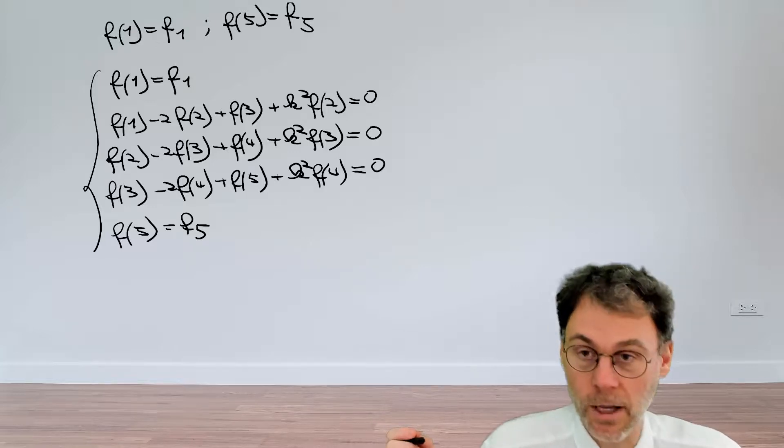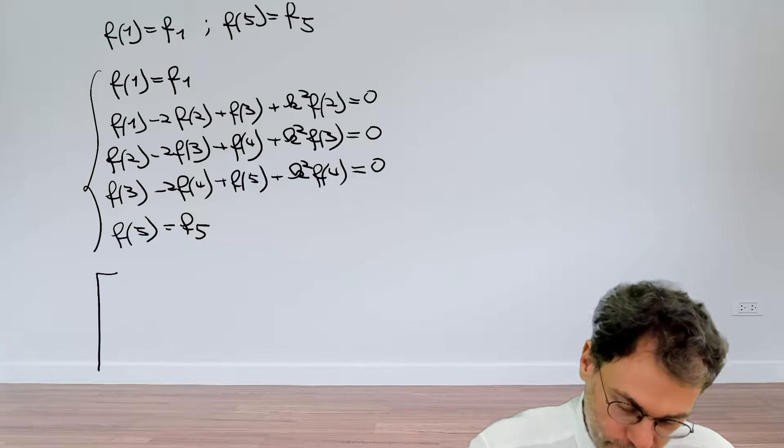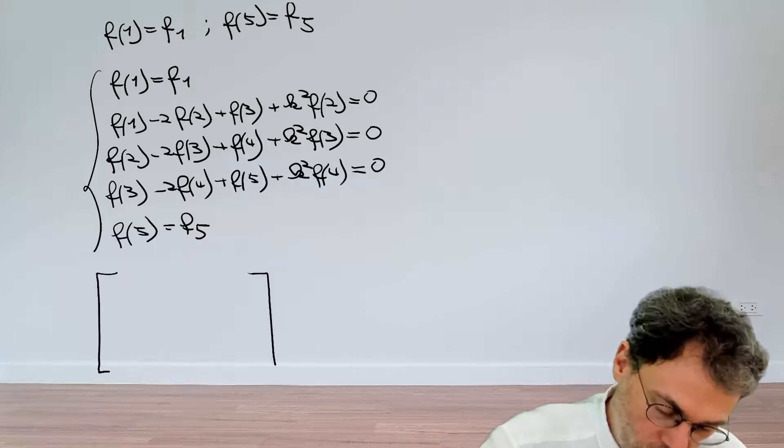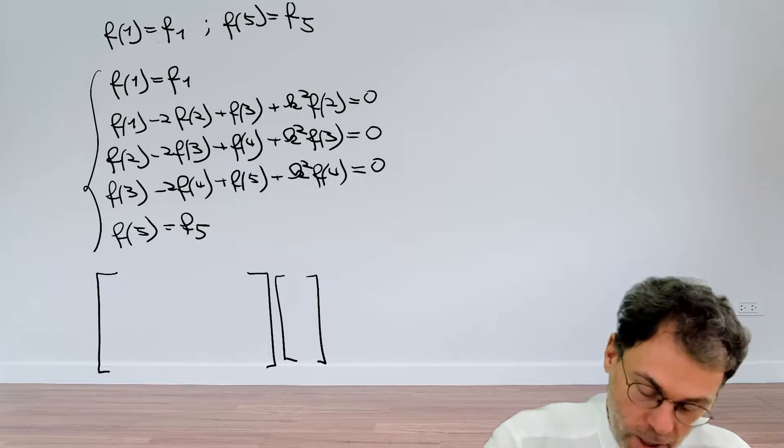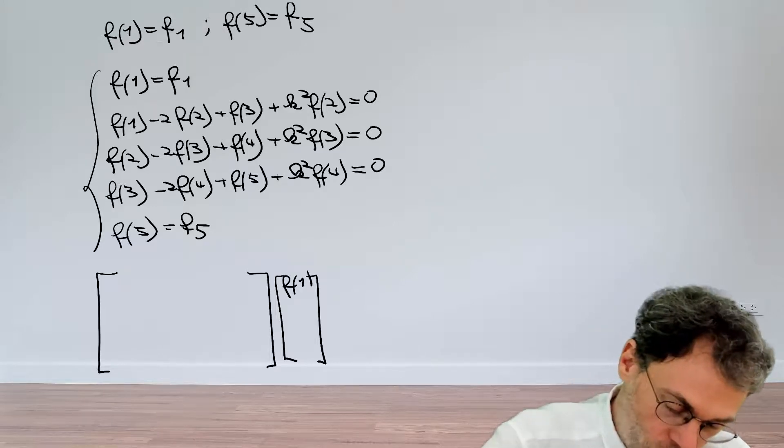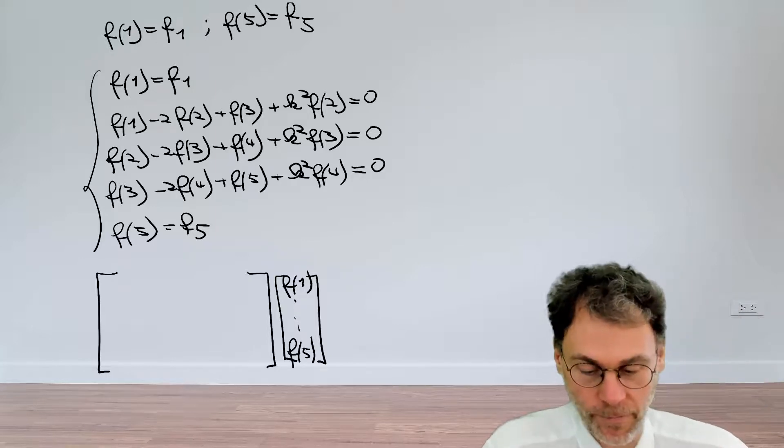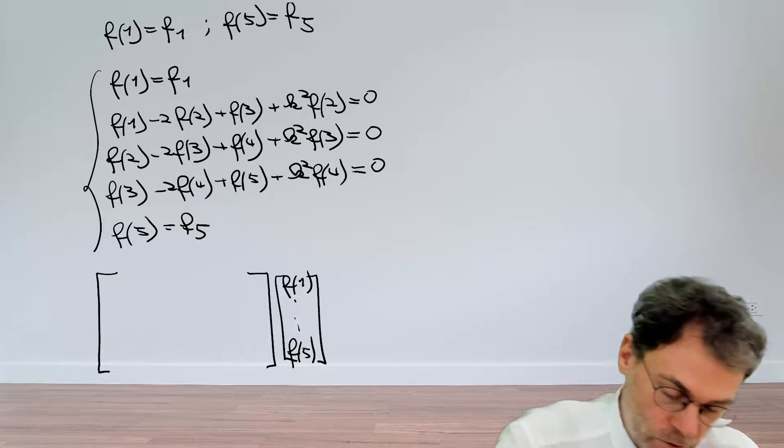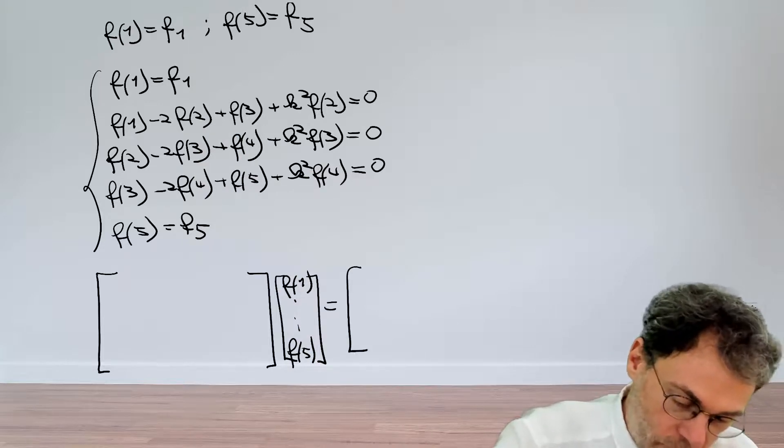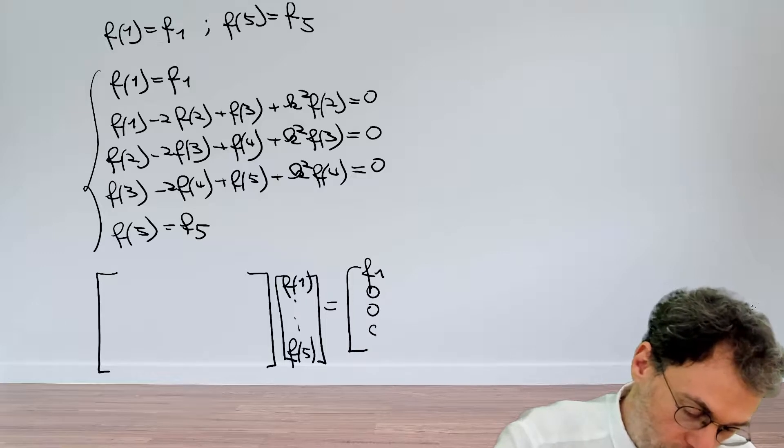And indeed, let's write that as a matrix to bring that out more clearly. So if we write that as a huge matrix here, where for this column vector we have the unknowns f1 up to f5. And then for the right-hand side, we have them over here. So it's mostly zeros apart from at the beginning positions. So we have f1, then three zeros and f5.